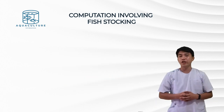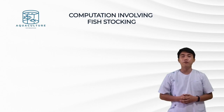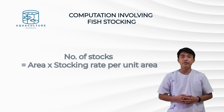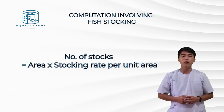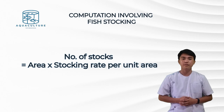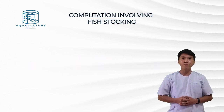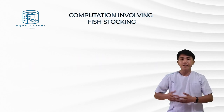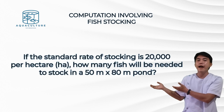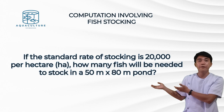For our second computation, this will be finding the total number of stocks. The formula is: number of stocks is equal to area times the stocking rate per unit area. Example problem: if the standard stocking rate is 20,000 fish per hectare, how many fish will be needed to stock in a 50-meter by 80-meter pond?